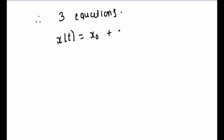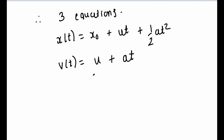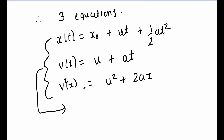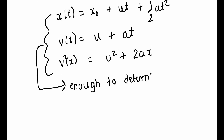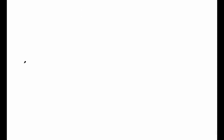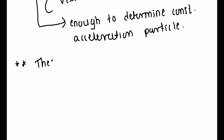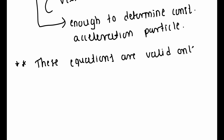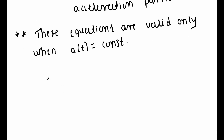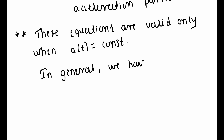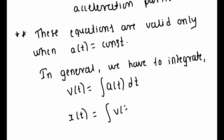Thus, these three equations — x = x0 + u·t + ½A·t², v = u + A·t, and v² = u² + 2A·x — are enough to determine the motion of a particle moving with constant acceleration in one dimension. Remember that these equations are valid only when the acceleration of the particle is constant. If the acceleration is a function of time, then we have to integrate it to get v(t) and x(t).